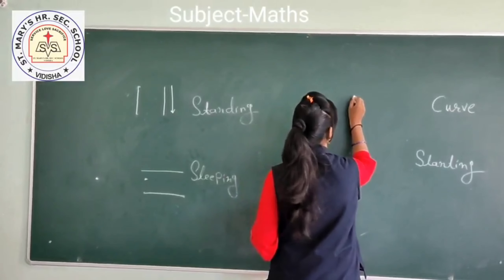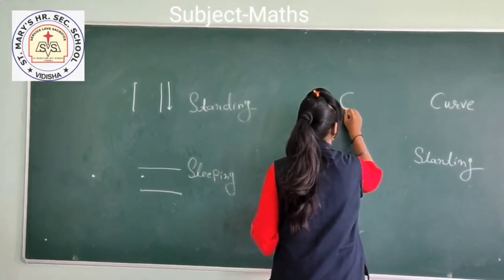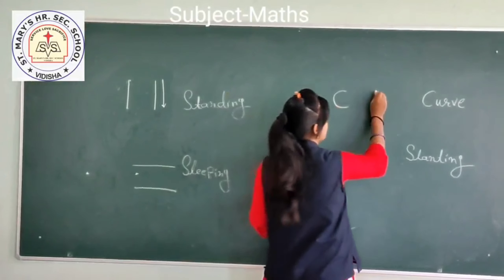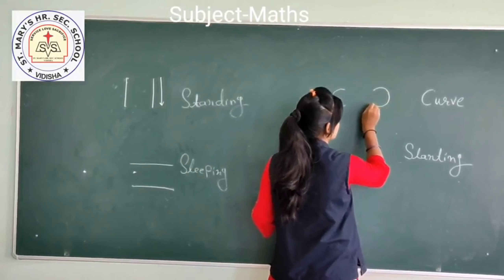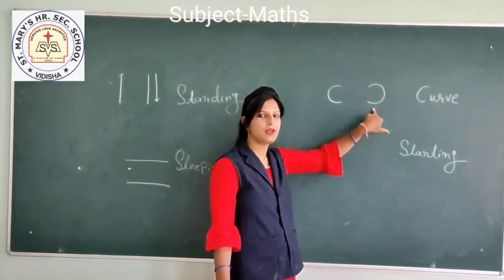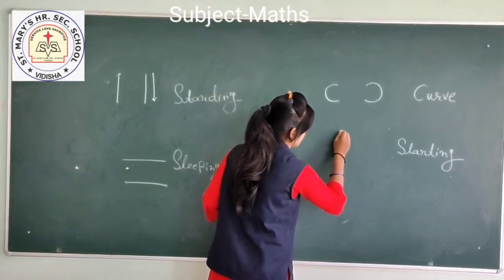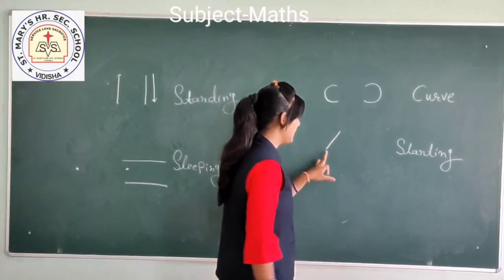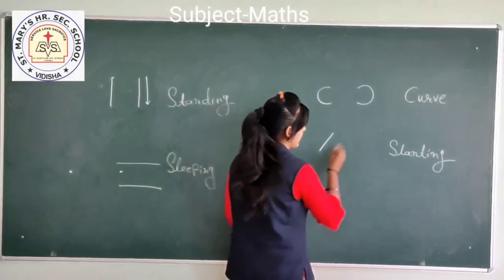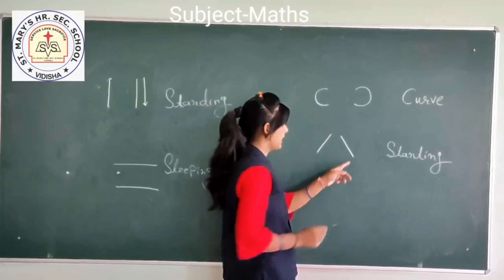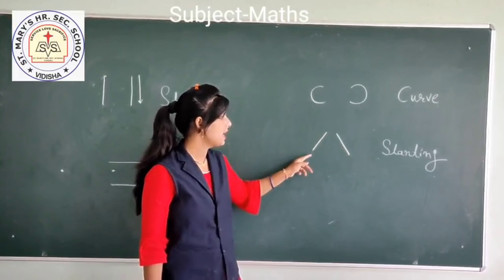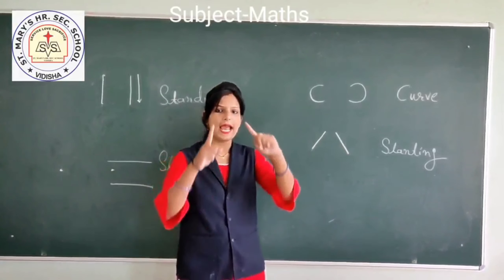Now, curve. This is a right curve. And this is a flat curve. This is a standing line and this is a flat curve. This side is a straight line, and this is a left standing line, and this is a right standing line.